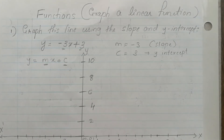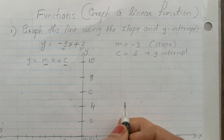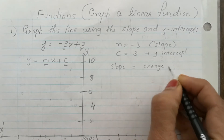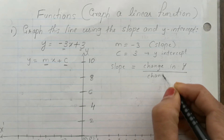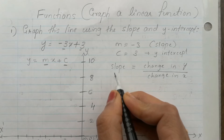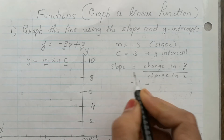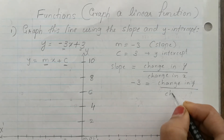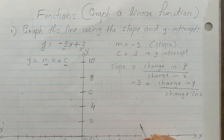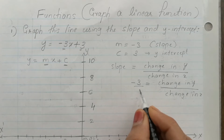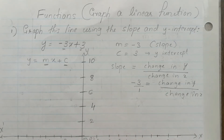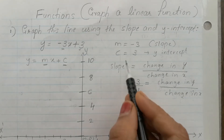Now let's find any two points on the graph. Slope is given as negative 3, and slope is nothing but m. So negative 3 is equal to change in y divided by change in x. Negative 3 can be written as negative 3 over 1. So change in y is negative 3 and change in x is 1. The y-intercept is 3.